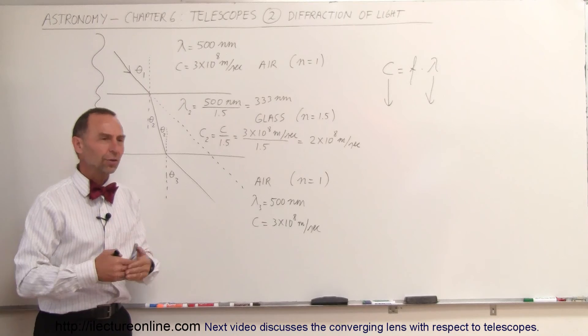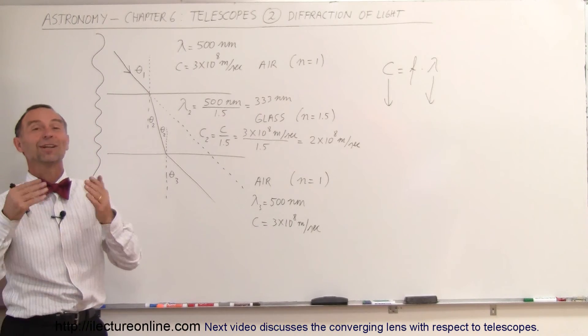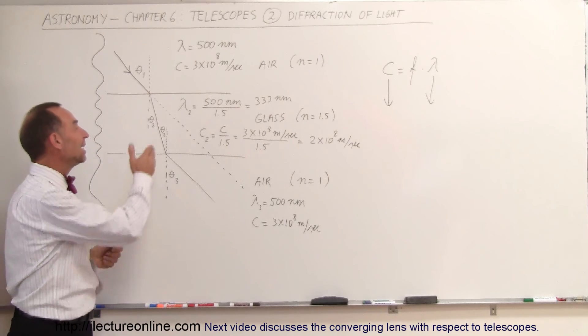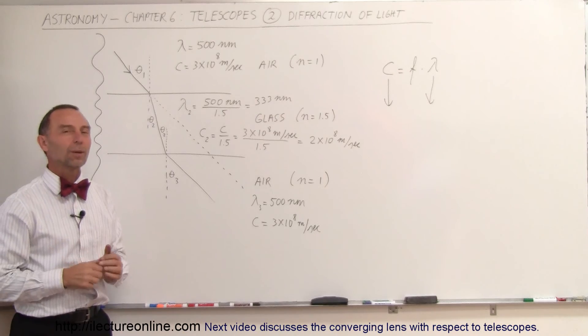It does the same when it enters water, crystals, anything else where light can travel through. The light rays will bend, the light will slow down, and the wavelengths will become shorter.